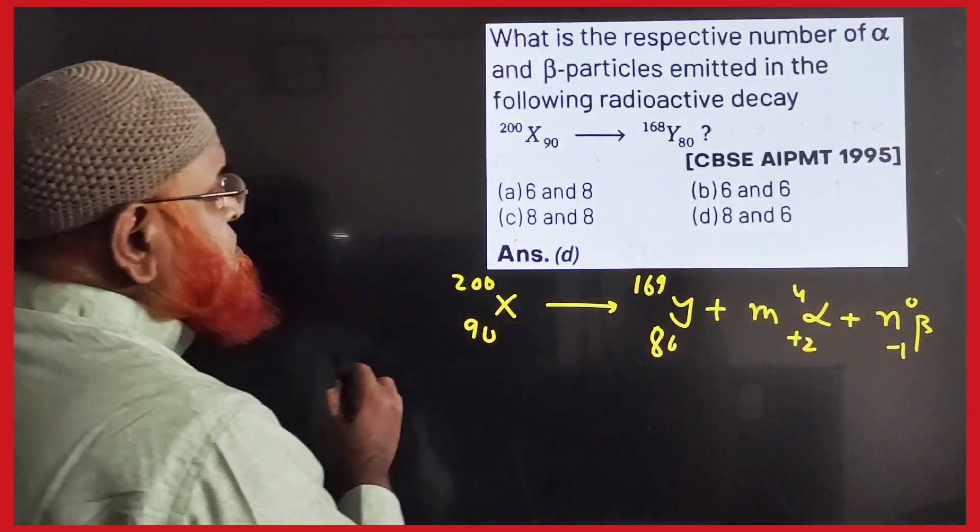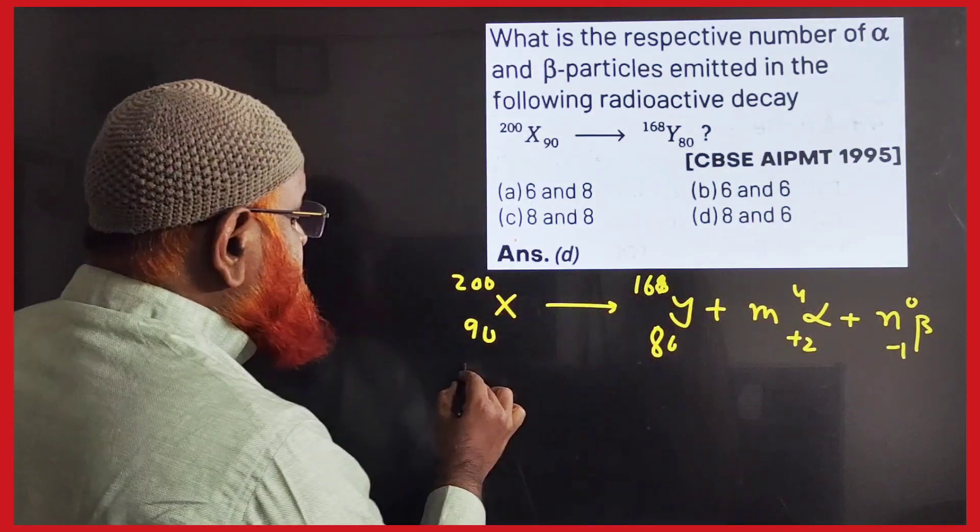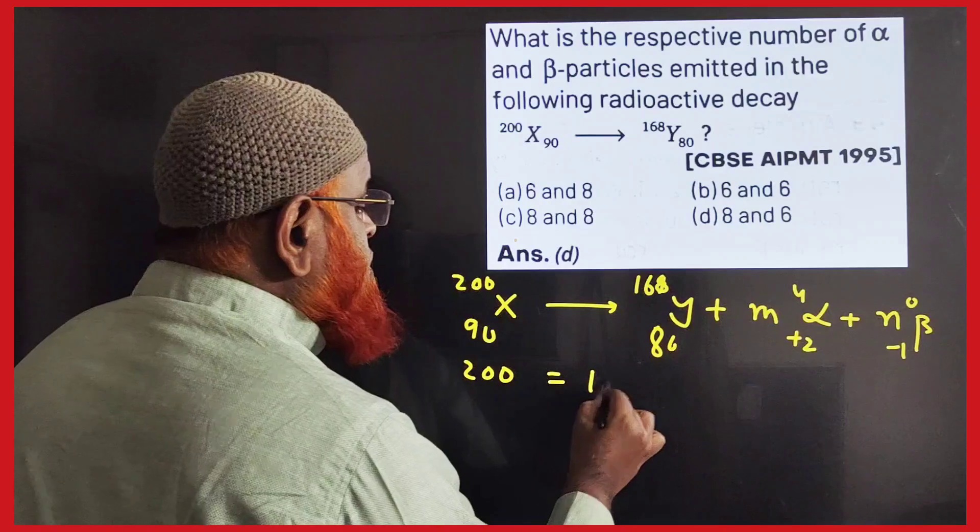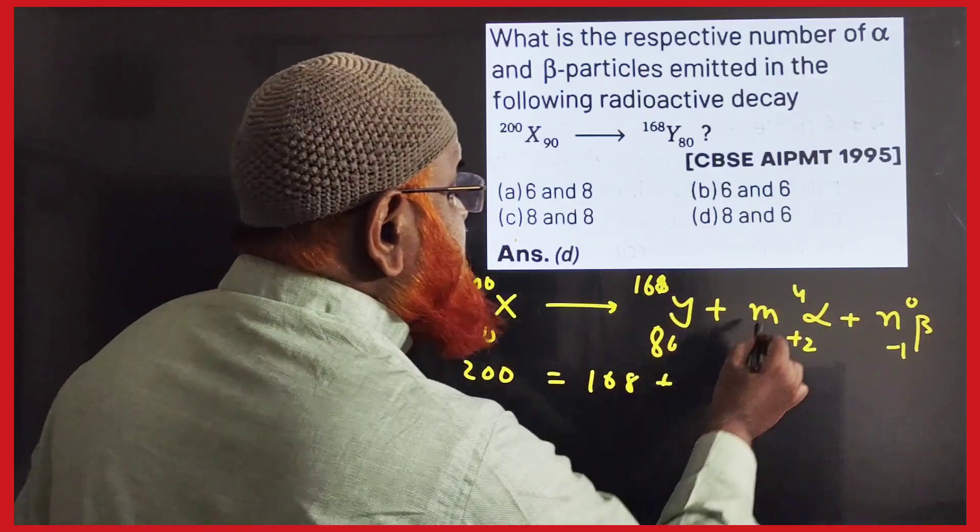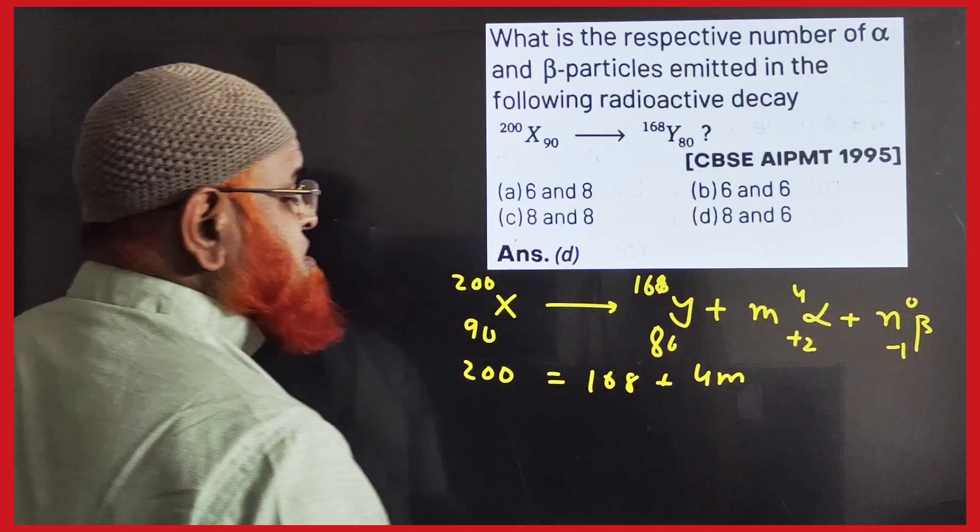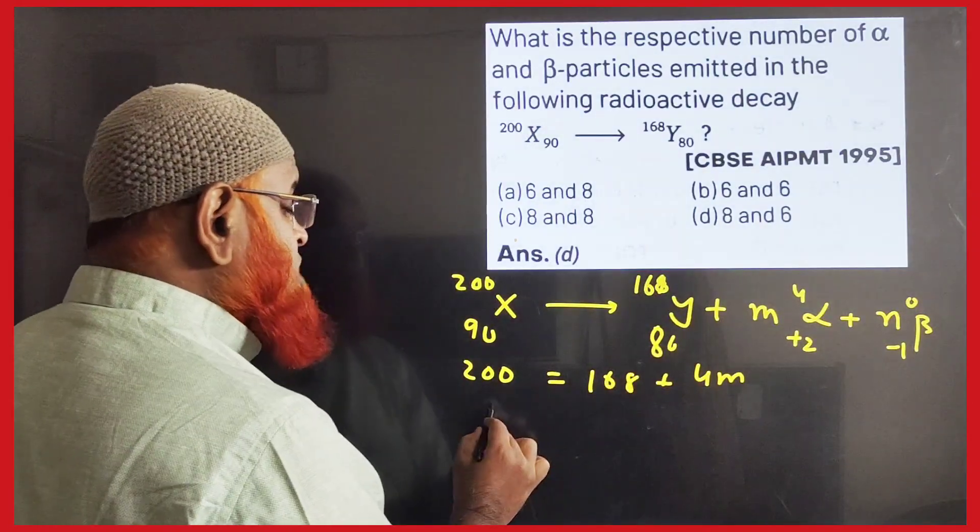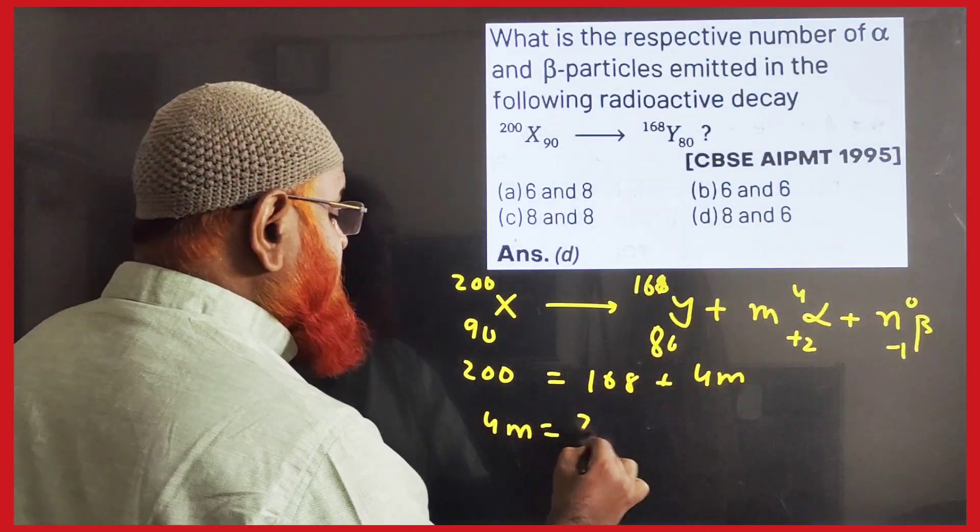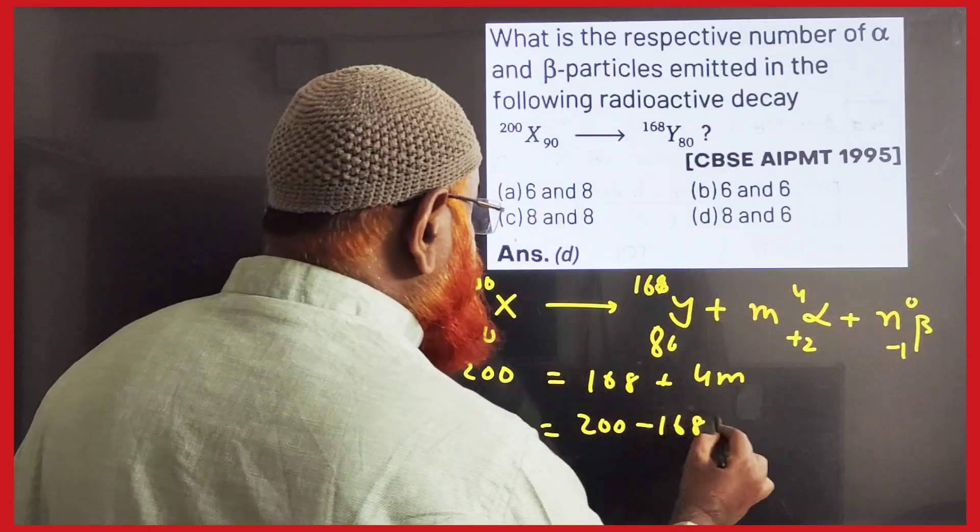Let us take the mass numbers now. This is 168, so 200 equals 168 plus M into 4, that's 4M, plus N into 0, that's 0. So here you have to find out what is M. 4M is nothing but 200 minus 168.